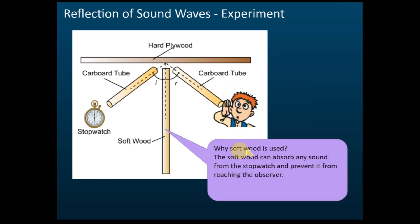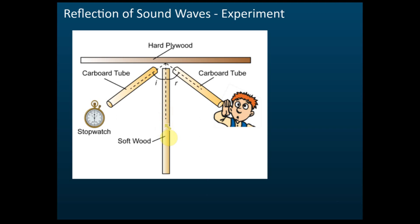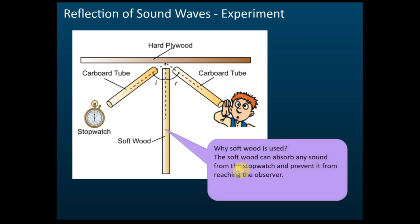The soft wood is used here because a soft surface can absorb sound. This ensures that the sound from the stopwatch does not move directly to the observer — it would move toward the soft wood and be absorbed. That is the function of the soft wood.